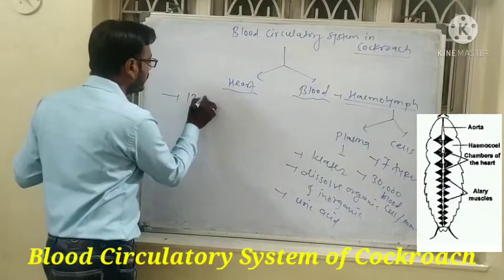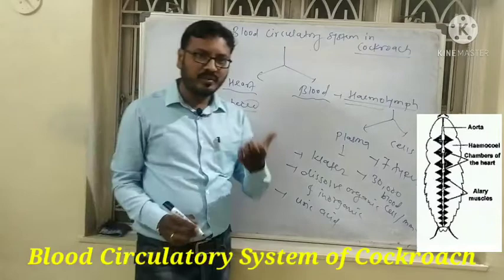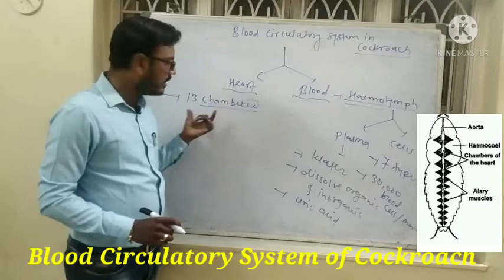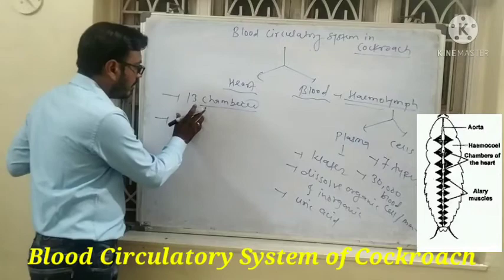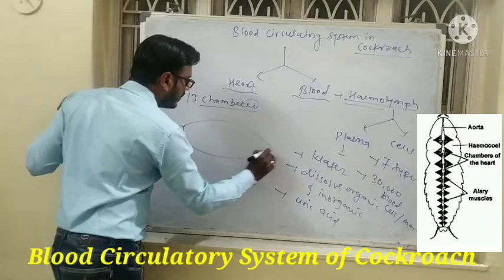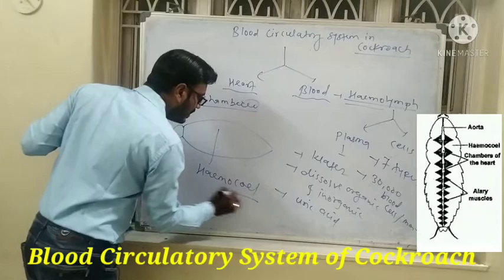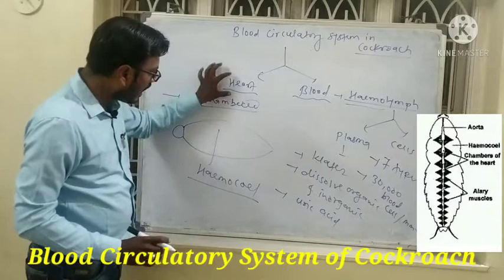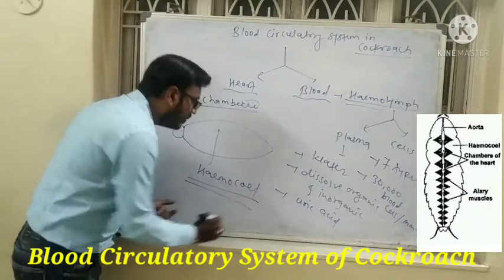The heart of the cockroach has 13 chambers. In human beings the heart has 4 chambers — the upper called the atrium and the lower called the ventricle. The cockroach has 13 chambers. The body cavity present in the cockroach is called the hemocoel, which contains the heart and the blood.